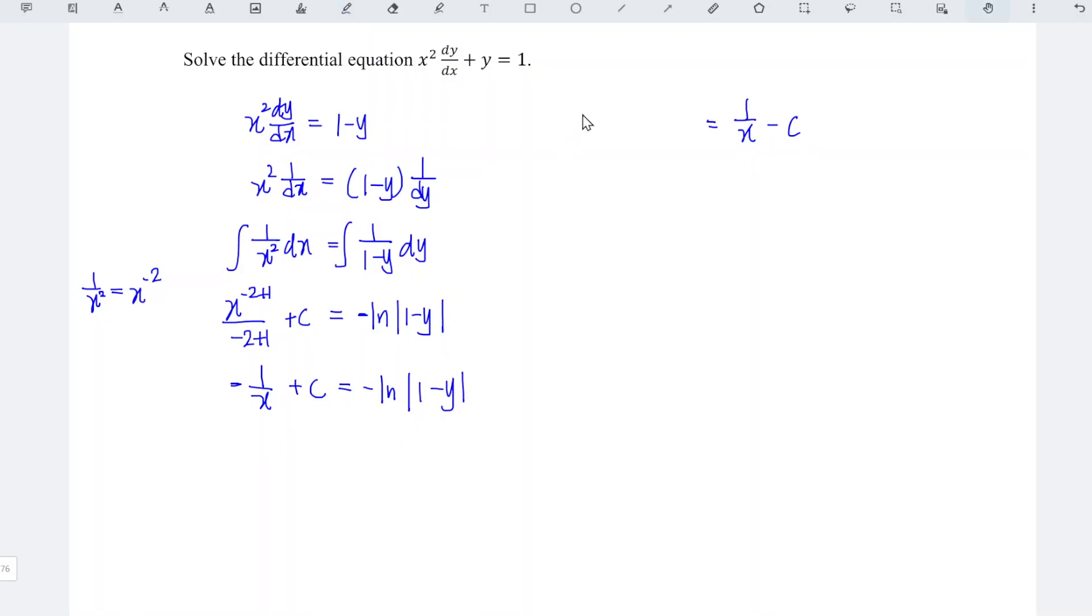Bring this to the left and it becomes ln |1 minus y|. We just have to take exponent both sides. Recall that when we have exponent...